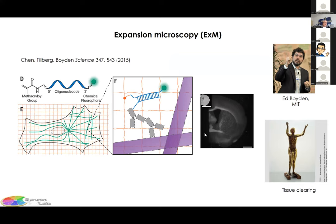The process involves linking your protein of interest into a charged polyacrylamide gel, then digesting or destroying the intermolecular interactions in the sample. Because the polyacrylamide is negatively charged, putting it in water overnight causes it to swell. Your fluorophores remain attached in the polyacrylamide meshwork, and depending on the expansion factor, this results in a much higher spatial resolution — you can achieve super-resolution on a standard confocal microscope easily.